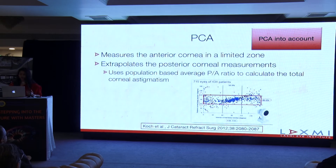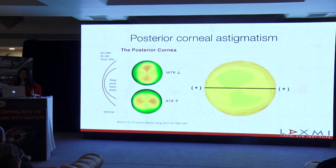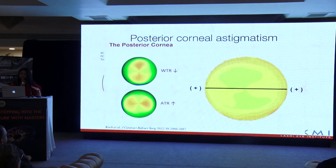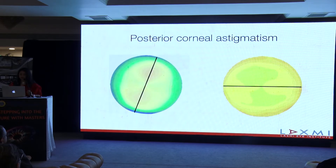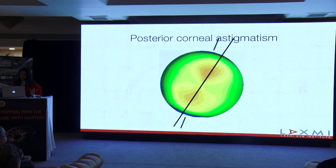Thanks to Dr. Koch, we now know there is a huge variability in posterior corneal astigmatism and the way it is found in our population — and we can no longer rely on machines which extrapolate it. Why is the PCA important? For the same amount of anterior corneal curvature, if the posterior cornea is steeper, the total keratometry of the eye becomes less. We know the posterior cornea is steeper vertically, acting as a minus lens vertically and a plus lens in the horizontal meridian — so it reduces with-the-rule and increases against-the-rule astigmatism. But the reality is more complex, as both the anterior and posterior cornea contribute to total corneal astigmatism, resulting in a totally different corneal astigmatism which may not follow the previous rule.